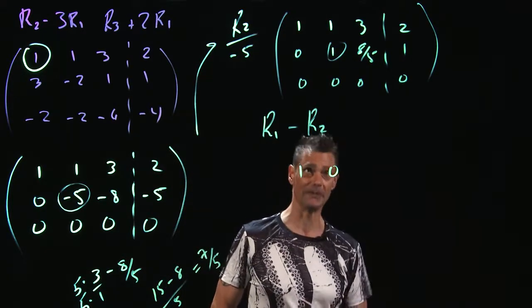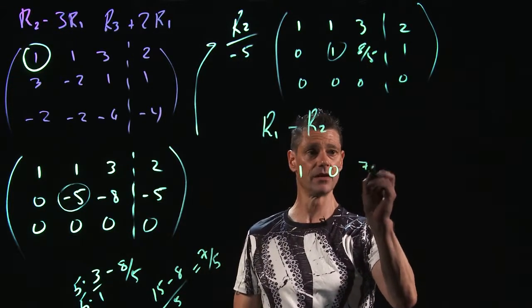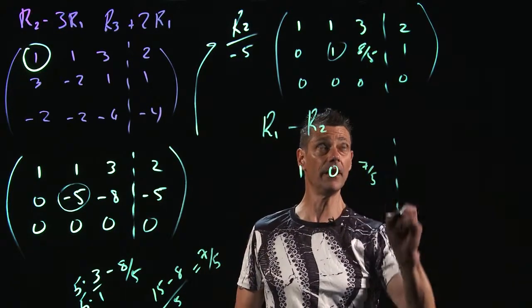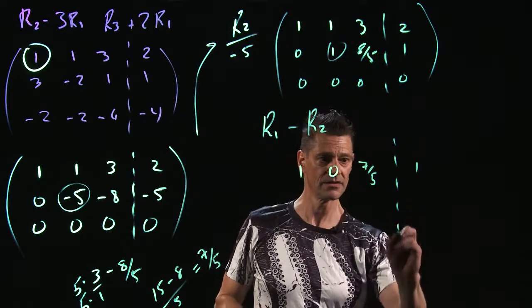So this will become 7 fifths. And then 2 minus 1 is 1. And this goes down a little more.